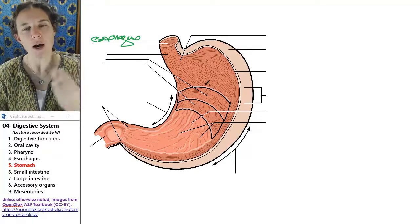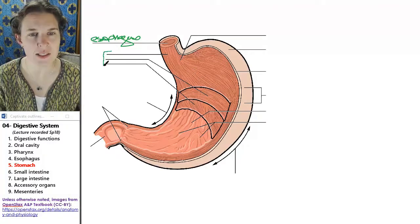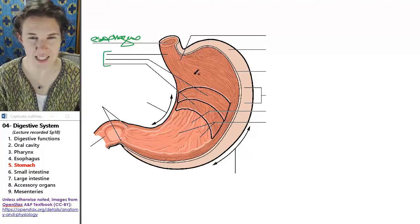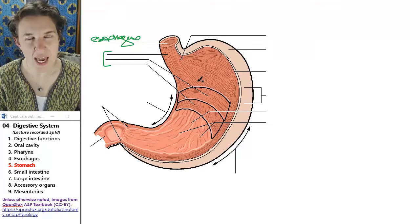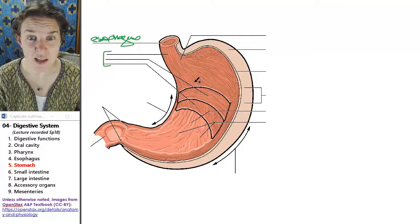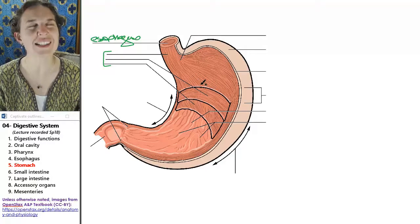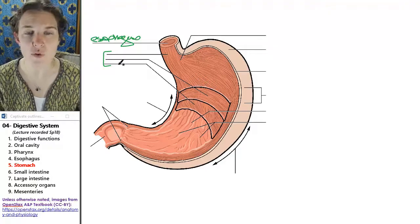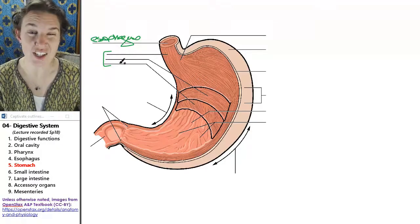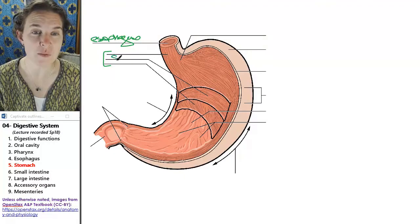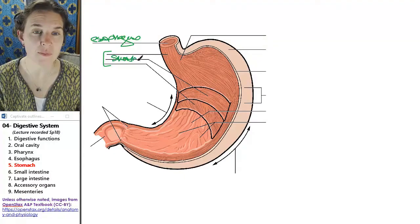So what you'll notice, this is kind of an odd way of depicting this, but the stomach has a significant amount of smooth muscle, and it actually has three layers of smooth muscle. Let's say three layers.